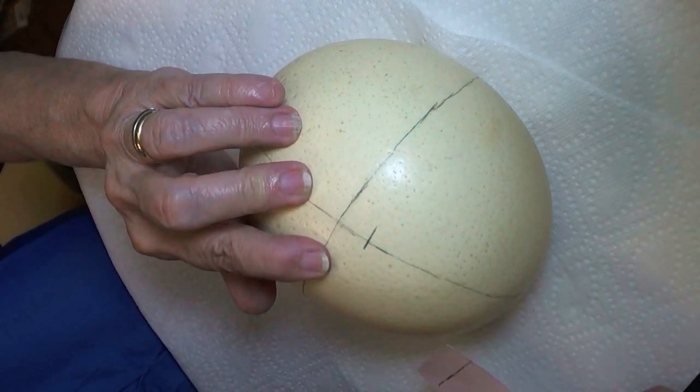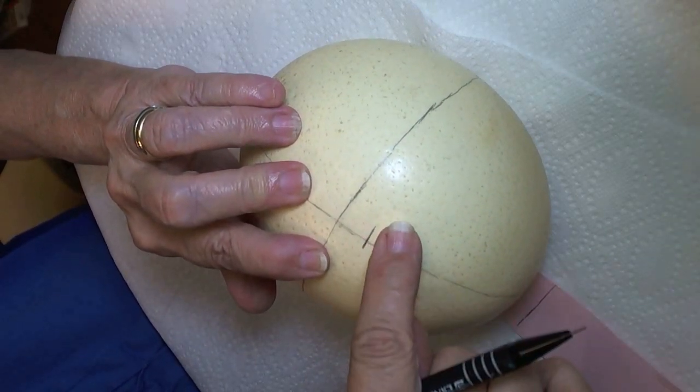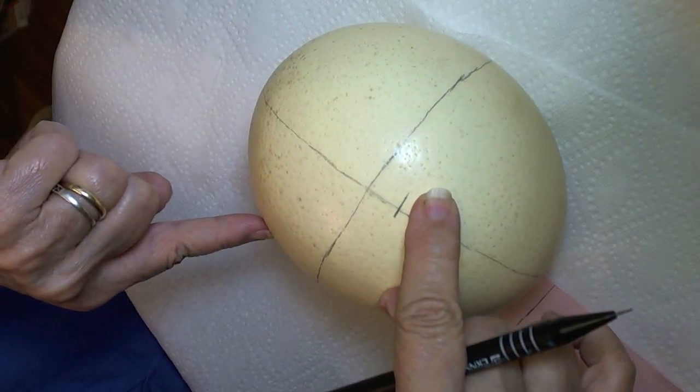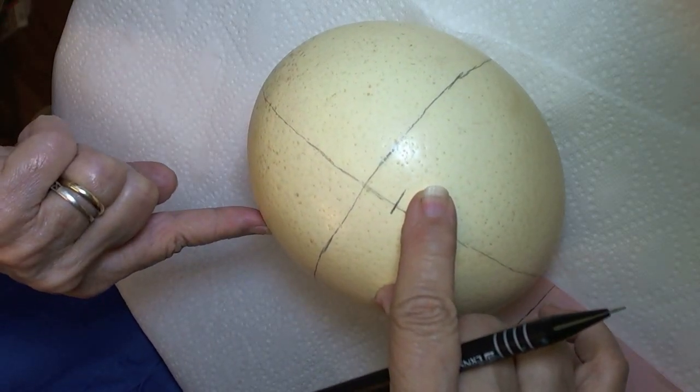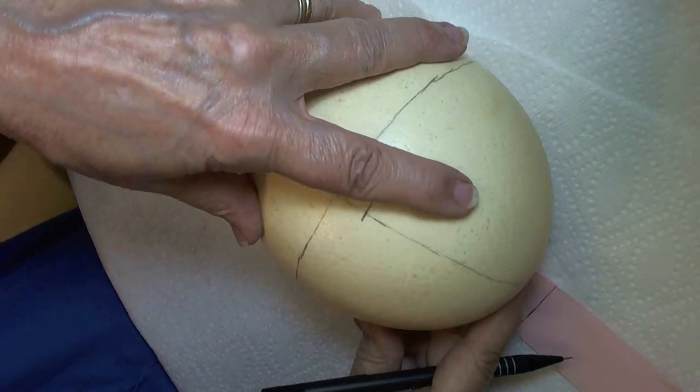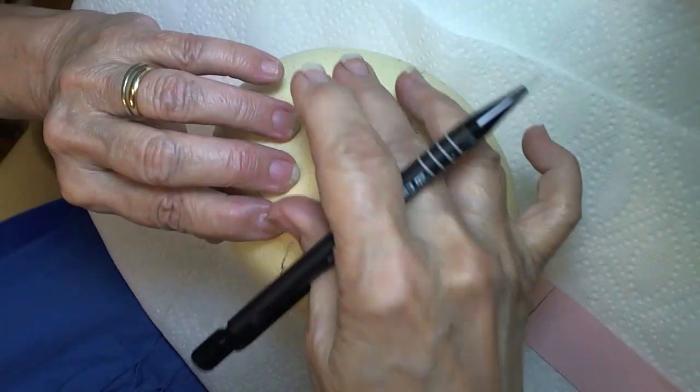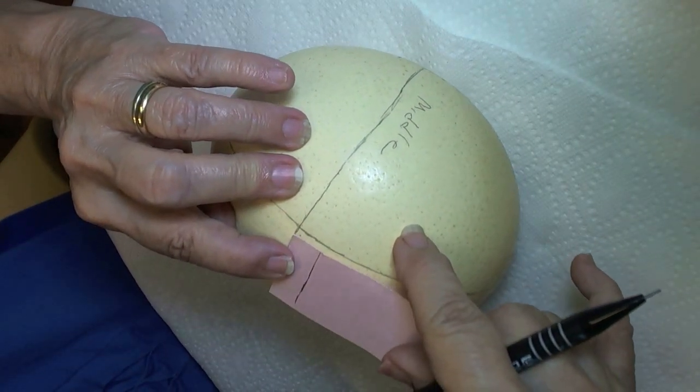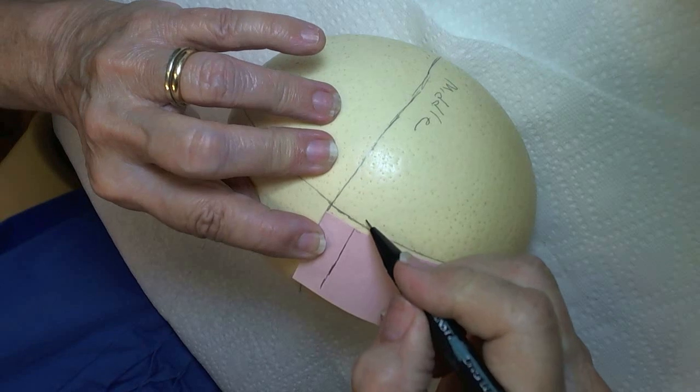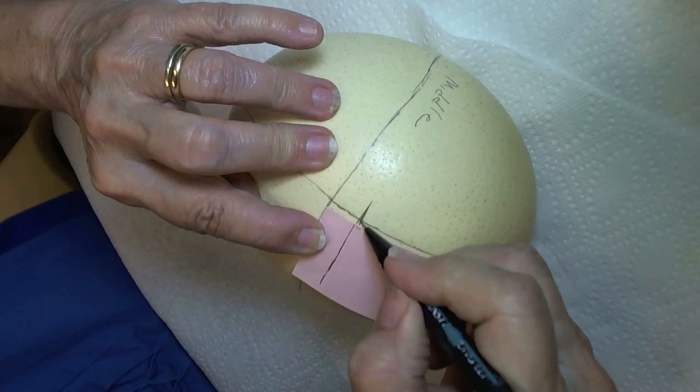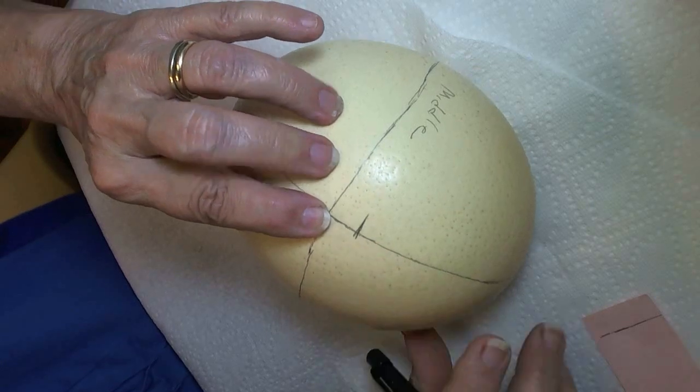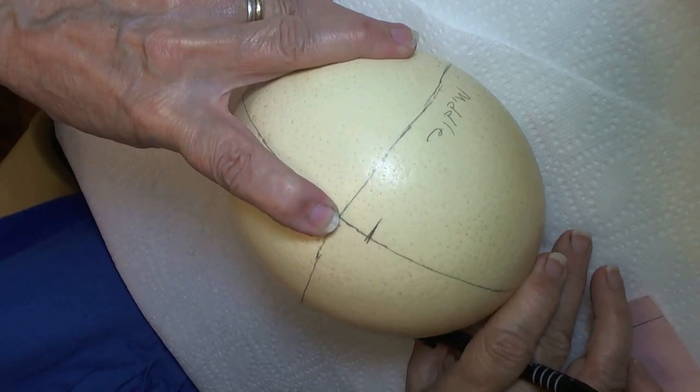Now instead of marking on this side I'm going to do the exact opposite here by turning my side of the egg around. Again I'm going to do this on the opposite side.